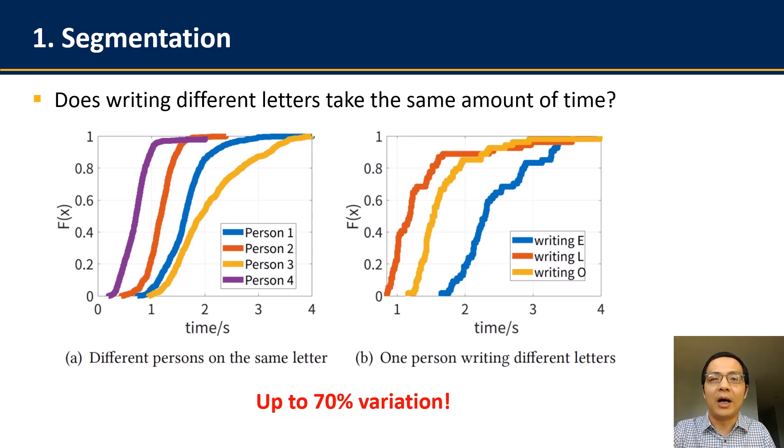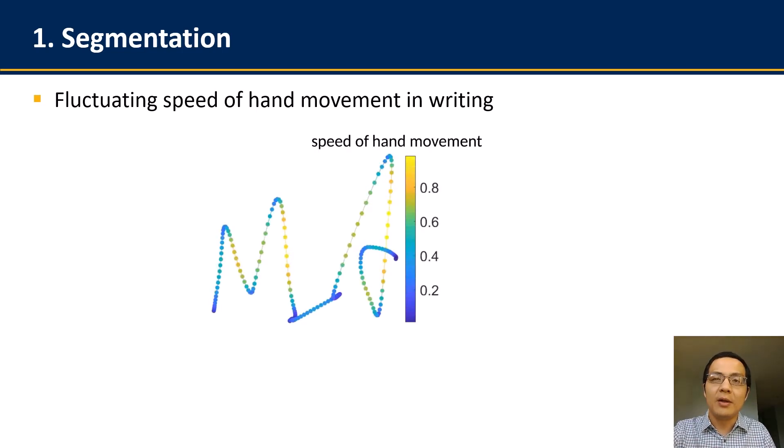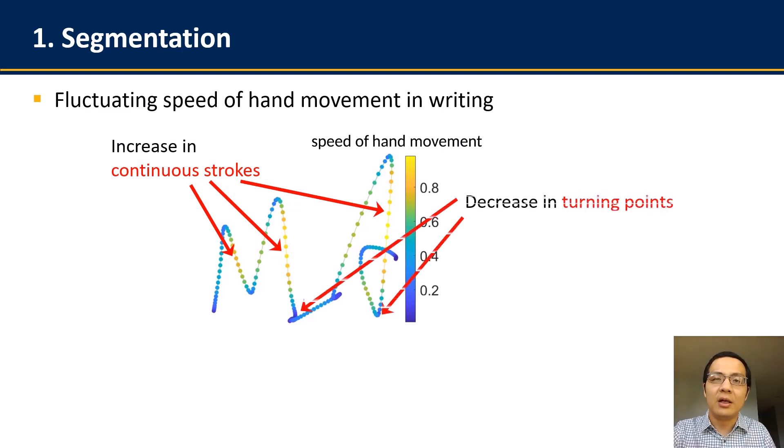To find such characteristics for segmentation, in MagHacker, we focus on the speed of human's hand movement in handwriting. And we find out that such speed is highly fluctuating when you write letters. More specifically, we find out that such writing speed usually increases when people are drawing continuous strokes in letters, such as those long strokes when writing letter M and A in this example. And on the other hand, such writing speed will significantly drop on turning points in writing.